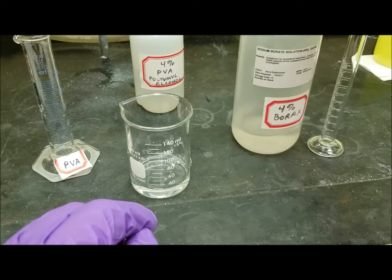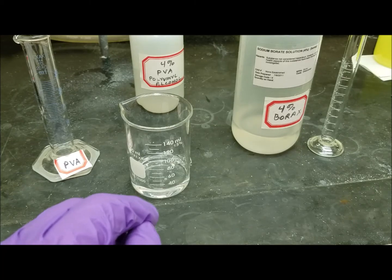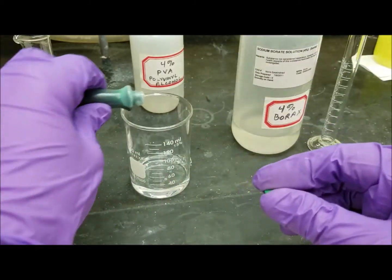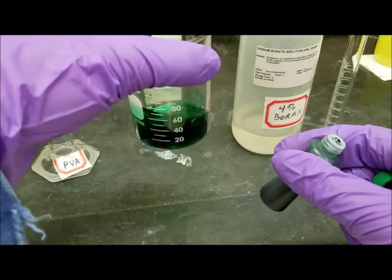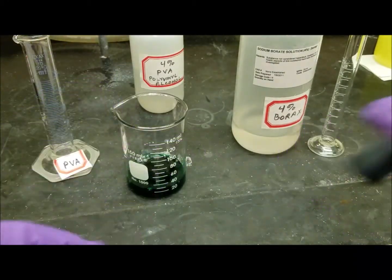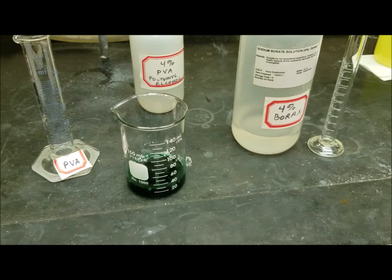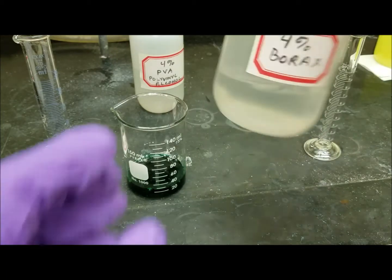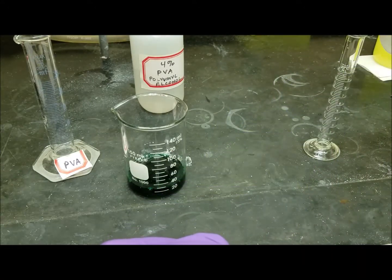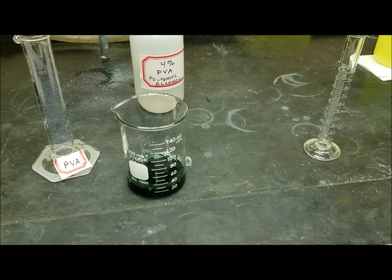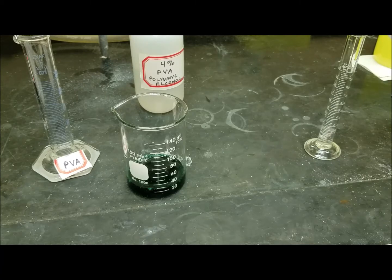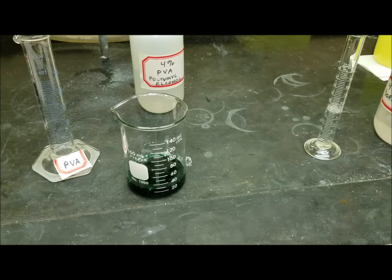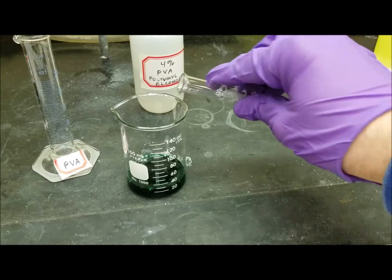Now when we add, we're going to add 10 milliliters of borax to that, but first let's make this a little more colorful. So we're going to add some green food coloring to this. And then we're going to add our 4% borax, 10 milliliters, I think, or was it 5? 5 milliliters.